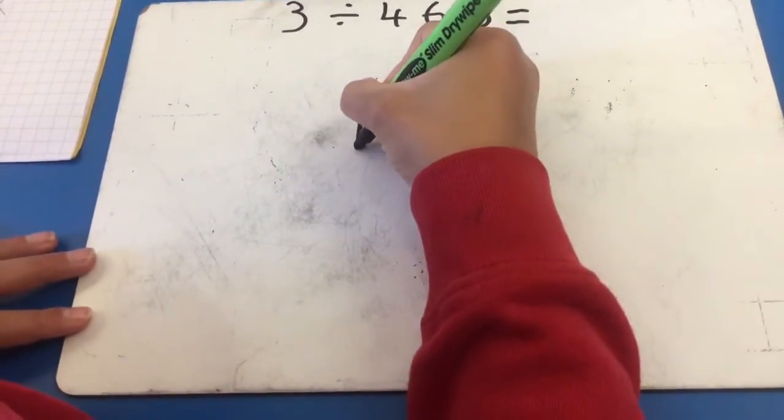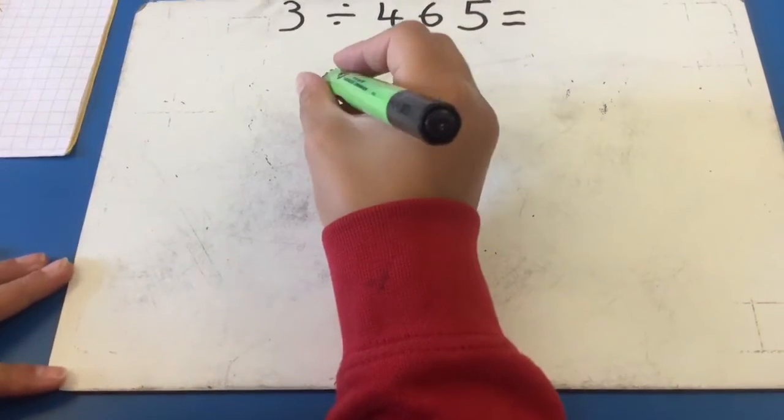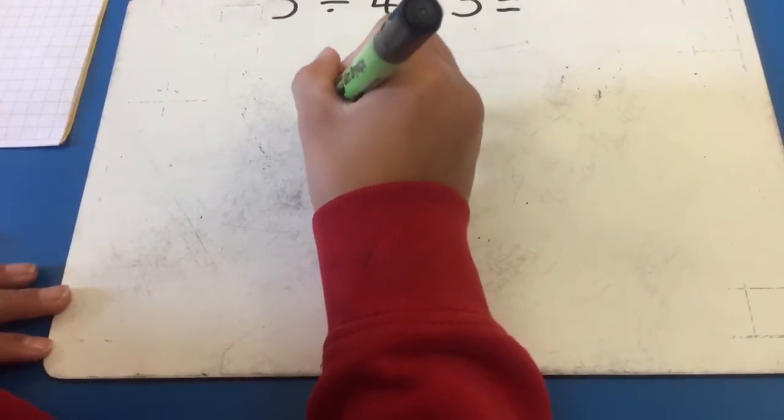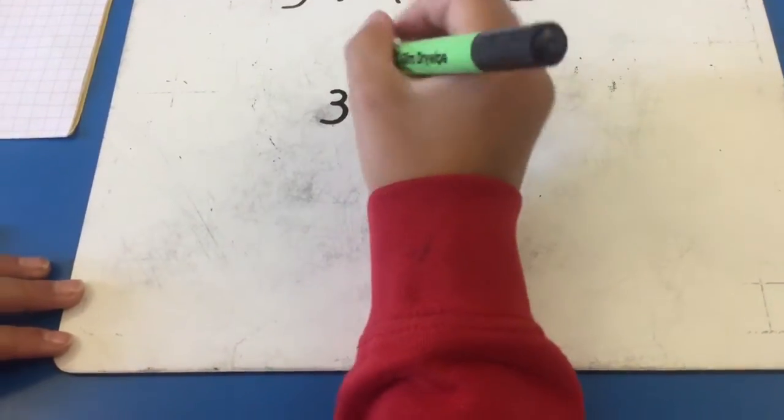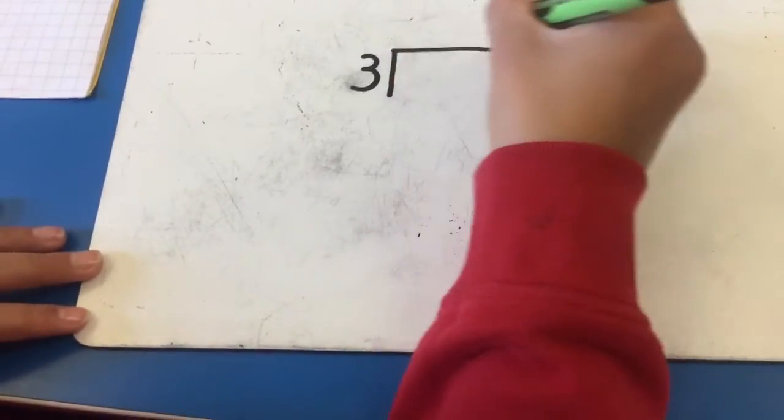First of all, you do your divisor. Next, you do the number you are dividing by next to the vertical line. Then, you do the biggest number underneath the horizontal line.